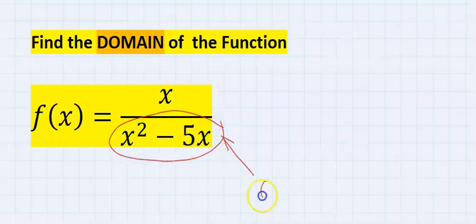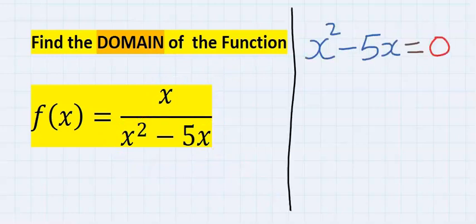To avoid getting zero at the denominator, zero is not a problem at the numerator. Next, let's solve for the denominator, equating it to zero. However, at the denominator, x must not be equal to zero.